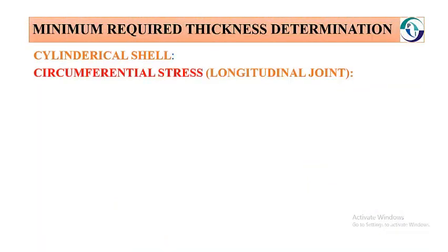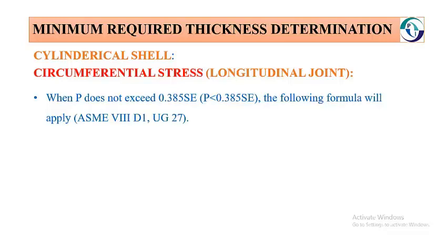Cylindrical shells which contain the longitudinal joint have circumferential stress acting on them. For this case, when P does not exceed 0.385SE — meaning P is less than 0.385SE — the following formula applies in accordance with ASME Section VIII Division 1, UG-27.